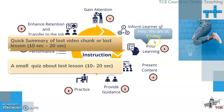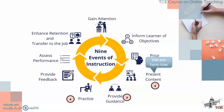Now we are at the third step: prior learning. Some tasks that can be given in this step for understanding prior learning include a quick summary of the last video chunk or last lesson in 10 to 20 seconds, or a small quiz about the last lesson launched for the user to think about for 10 to 20 seconds. By recalling prior learning we then move on to presenting content.